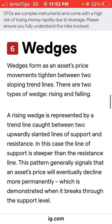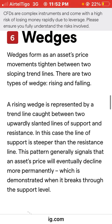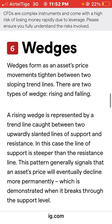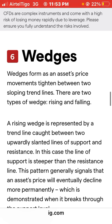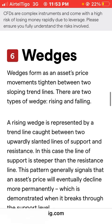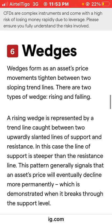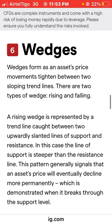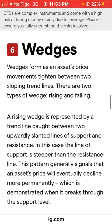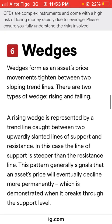Wedges form from the candle movements you see — the ups and downs, the green and red candles — once they are tightening between two sloping trend lines. A slope is something descending, coming down. Both trend lines are sloping, and as the price forms this tightening pattern, you can see the upper trend line and the lower trend line coming closer together.